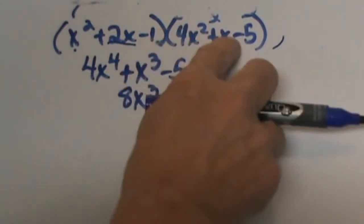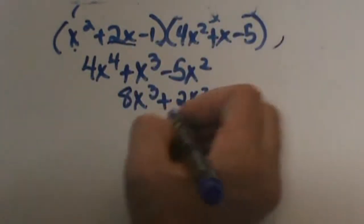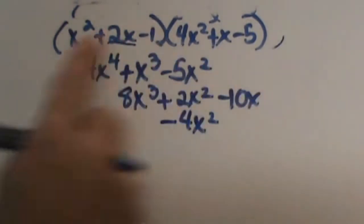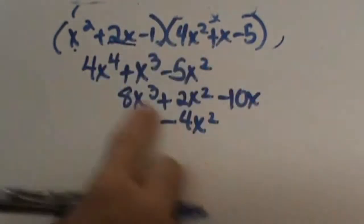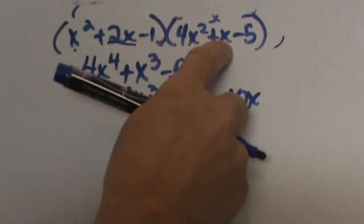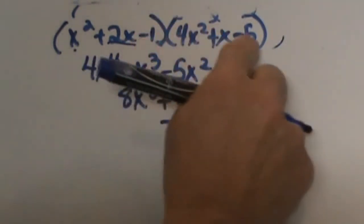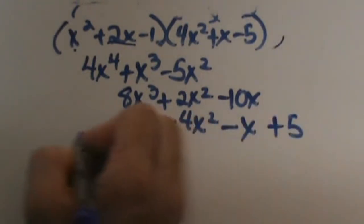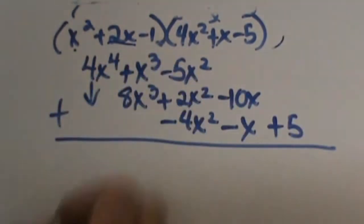Now let's take negative 1 times each term. Negative 1 times 4x squared is negative 4x squared — notice I'm dropping one spot down when I line it up. Negative 1 times positive x is negative x. Negative 1 times negative 5 is positive 5. Now I'm going to draw my line and add my columns up.